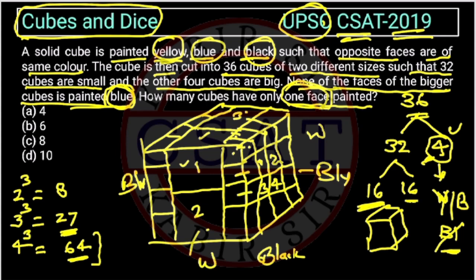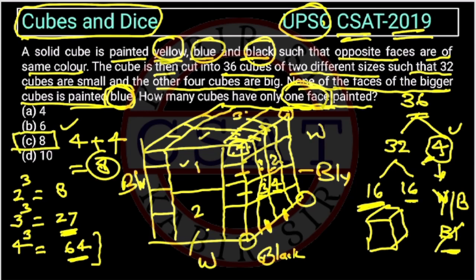These 4 center-face cubes are painted on only 1 face. On the back face there will also be 4 cubes painted on only 1 face. So we are getting 4 from the front and 4 from the back, giving a total of 8. The answer is option C. This is a little tricky — you have to imagine the structure, and this is the only case possible.